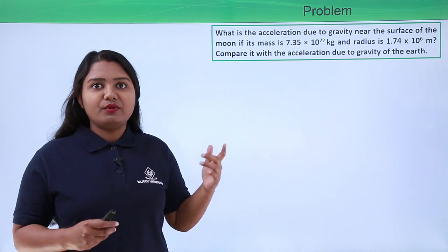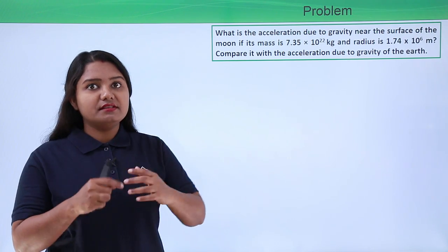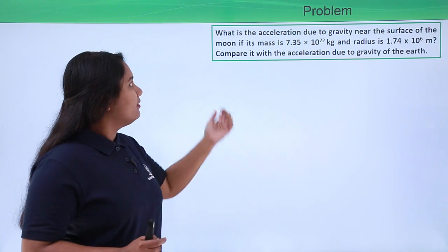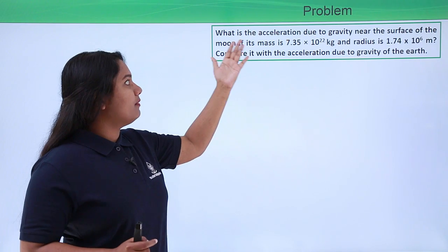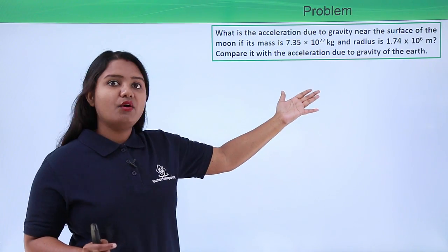So we need to find out what is the acceleration due to gravity near the surface of the moon, and the question has also given us the mass of the moon and the radius of the moon.